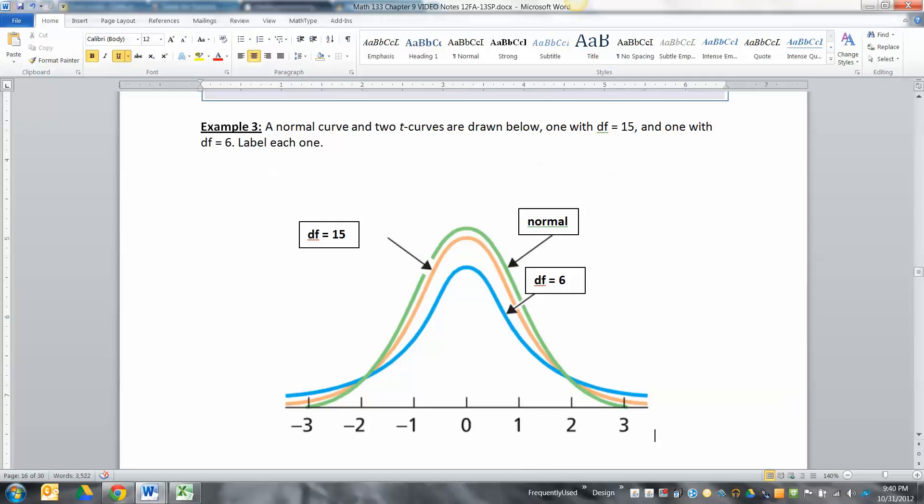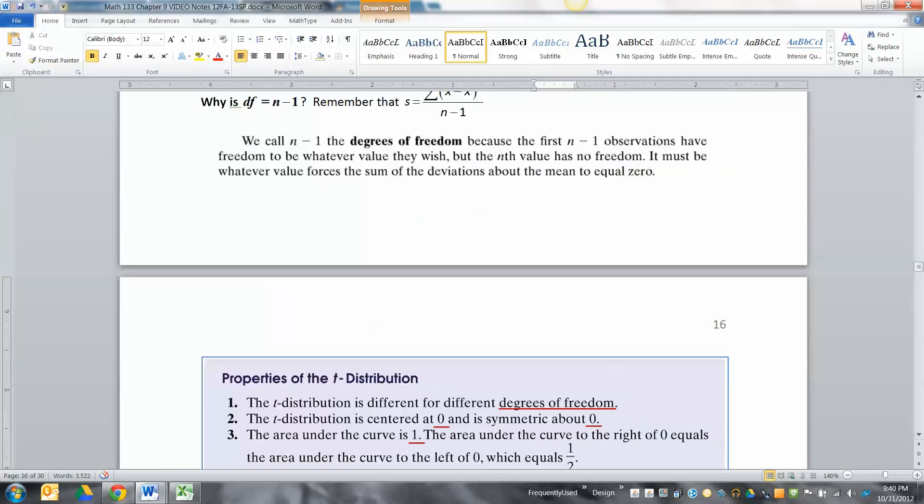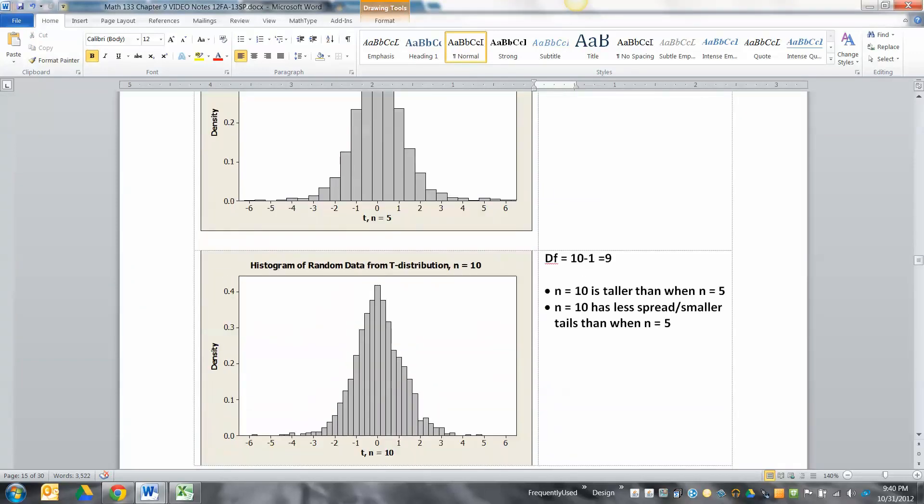One of these had degrees of freedom 15, one has degrees of freedom of six, and one's the normal curve. Degrees of freedom of six is this blue one, the one with the shortest peak and the fattest tails, because bigger degrees of freedom will have less spread than smaller degrees of freedom.